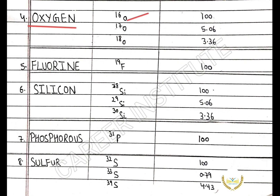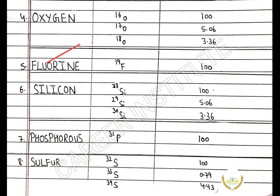The next element is oxygen. Oxygen-16 has the relative abundance of 100%. Oxygen-17 has the relative abundance of 5.06%. Oxygen-18 has the relative abundance of 3.36%.